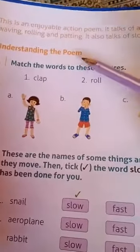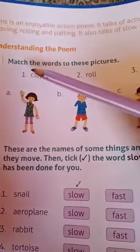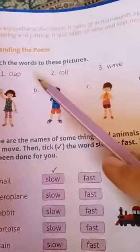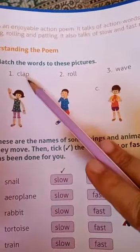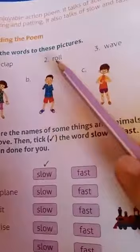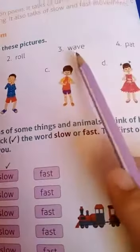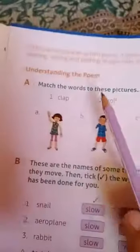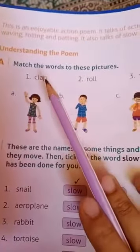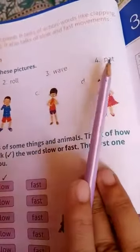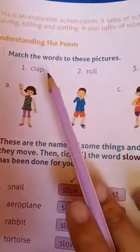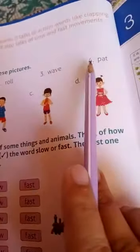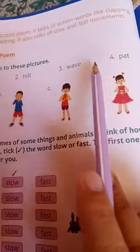Understanding the poem. Exercise A: Match the words to these pictures. Four words are given here — clap, roll, wave, pat. I know that you all know the meaning of these words. Clap, roll, wave, pat.